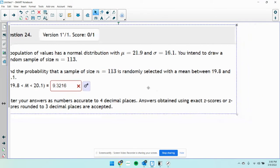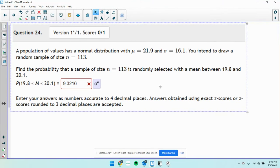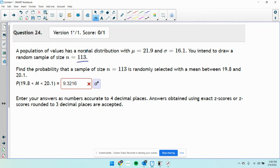So this one here, population of values has a normal distribution with μ equals 21.9 and σ equals 16.1. You intend to draw a random sample of size n equals 113. Find the probability that a sample of size 113 is randomly selected with the mean between these two values.